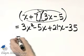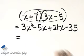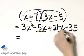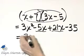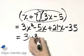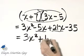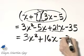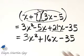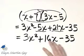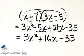Then we check to see if there are any like terms that we can combine. Notice these two terms are like terms, so that's 3x². Negative 5x plus 21x—negative 5 plus 21 is 16—so that's 16x minus 35. I can go no further. These are unlike terms, and this is my product.